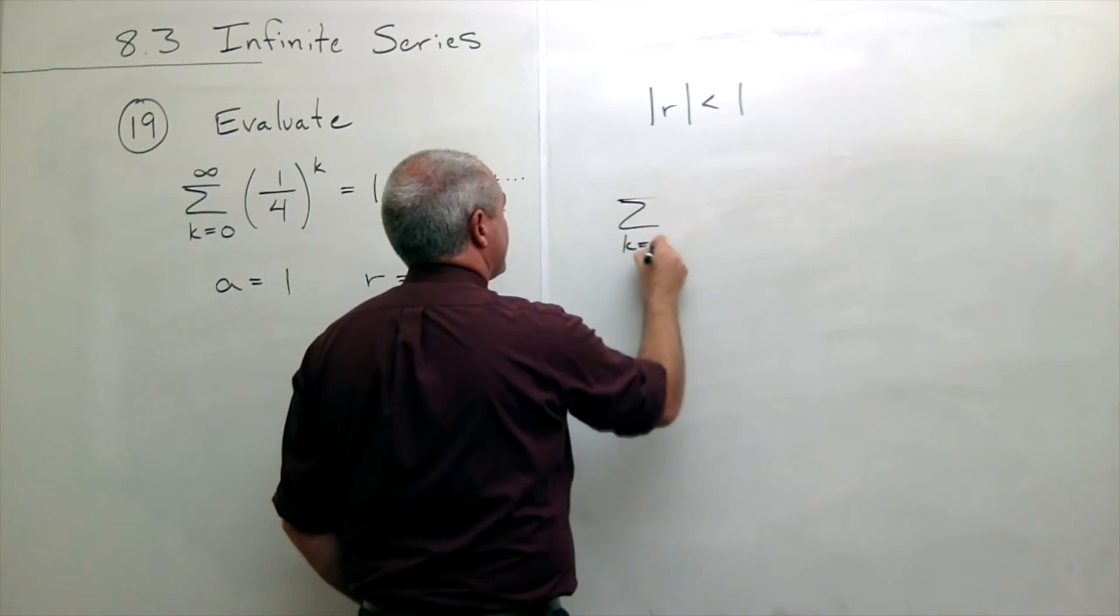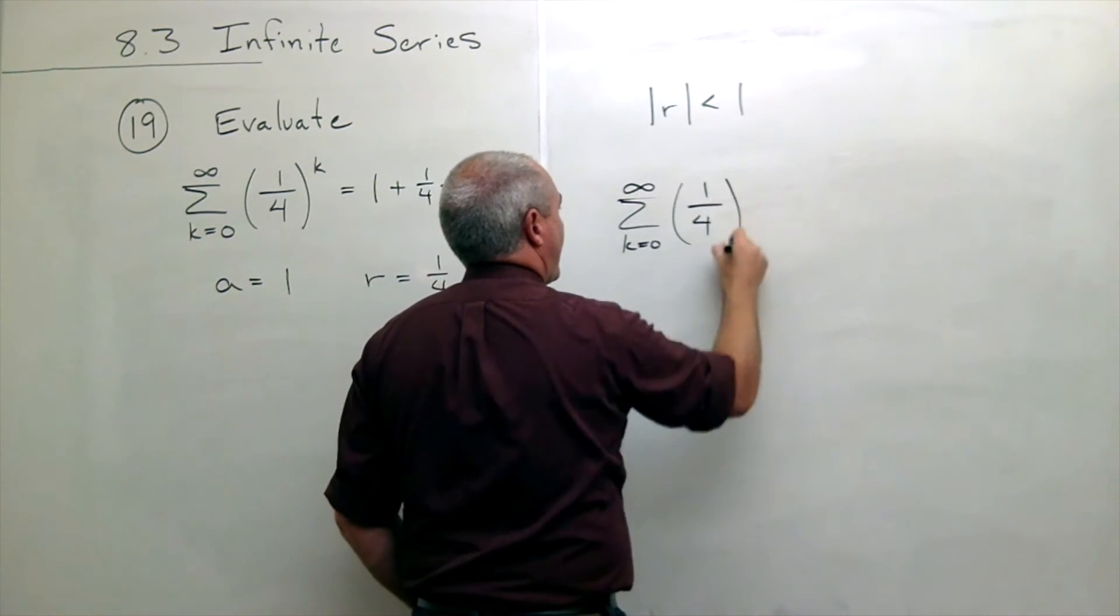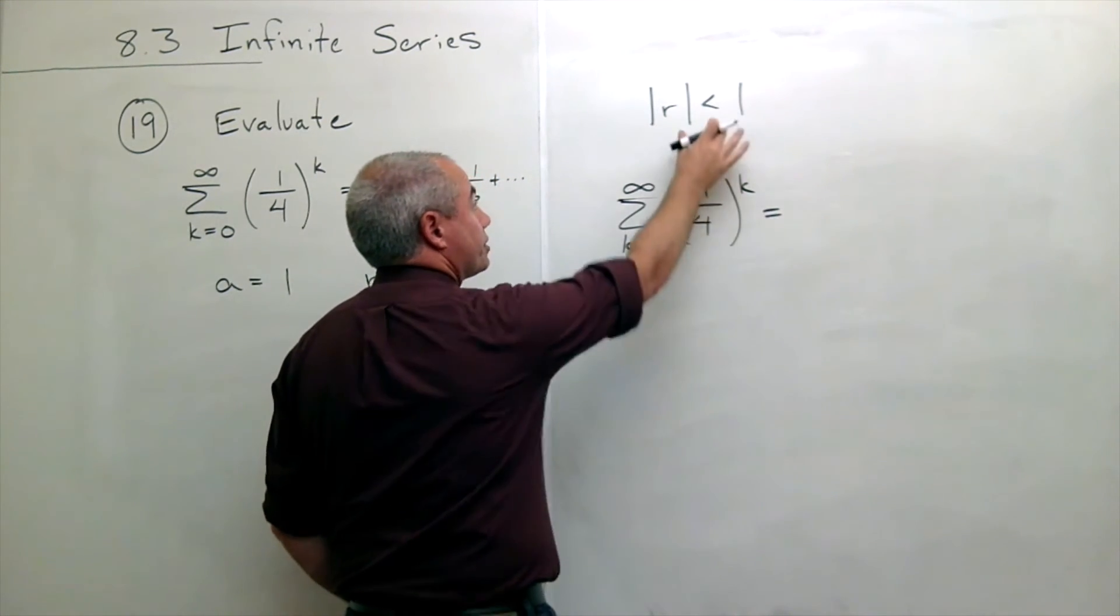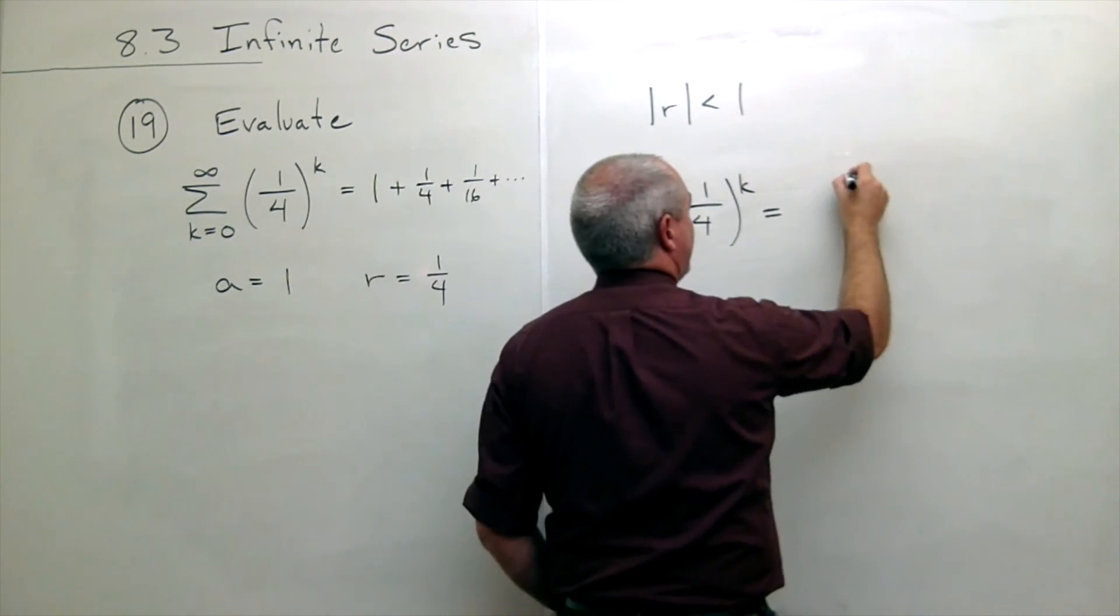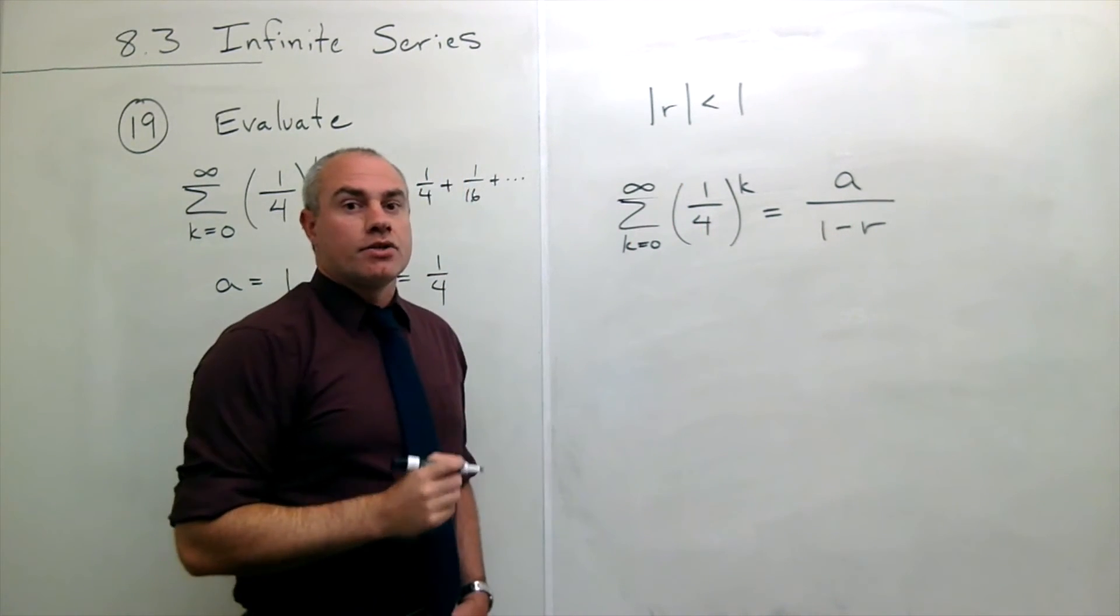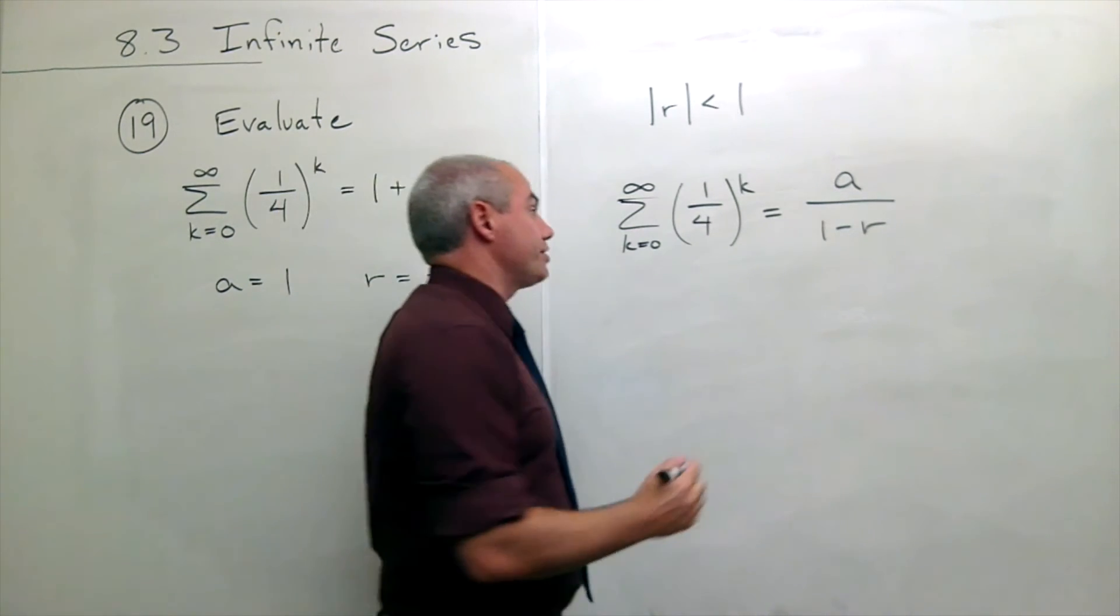And it will converge to the sum k going from zero to infinity of one fourth to the k. We know that that's going to be equal to, if it converges which it does, a over one minus r. So if we know what a is and we know what r is we can figure out what this thing converges to.